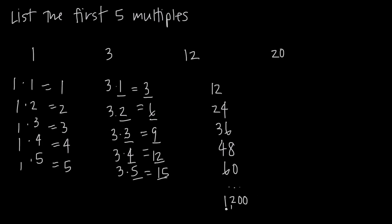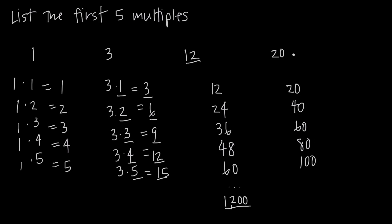As long as I can take the multiple and divide it by the original number and get a whole number answer, I know that this number is a multiple of this number. So finding the first 5 multiples of 20, we say 20 times 1 is 20, times 2 is 40, times 3 is 60, times 4 is 80, times 5 is 100, and these are all multiples of 20.